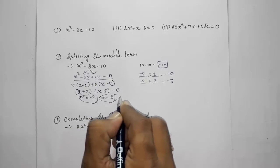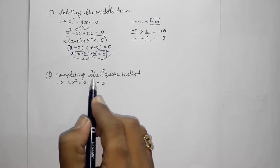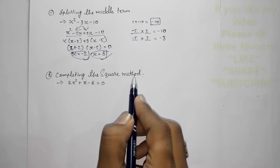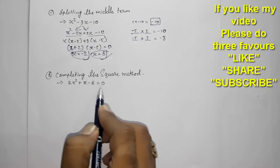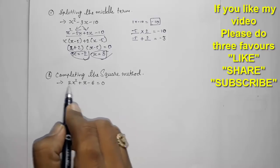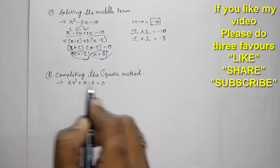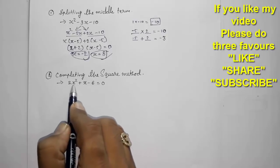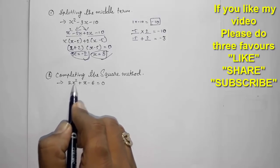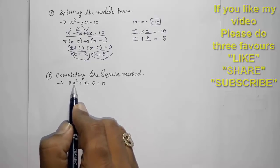The second method is completing the square. There are two ways to approach this: by multiplying a number to make a perfect square, or by dividing. Both approaches can make the leading coefficient a perfect square.